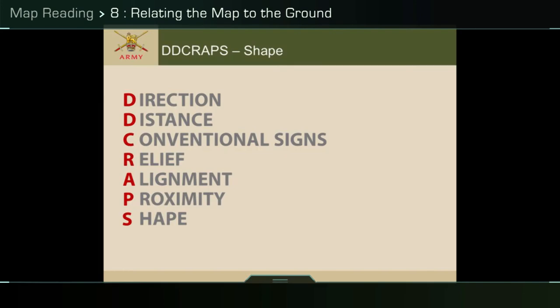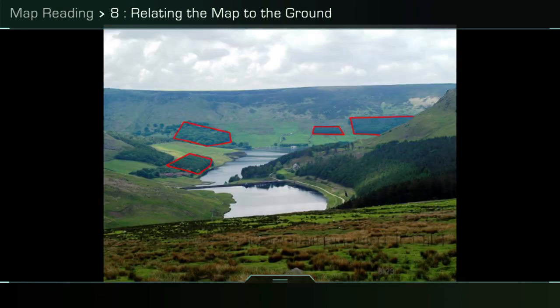Finally, shape: the shape of features — for example, wood blocks as shown in the picture — can make it easy to identify similarly shaped wood blocks on the map and can immediately bring you on to the area of interest.